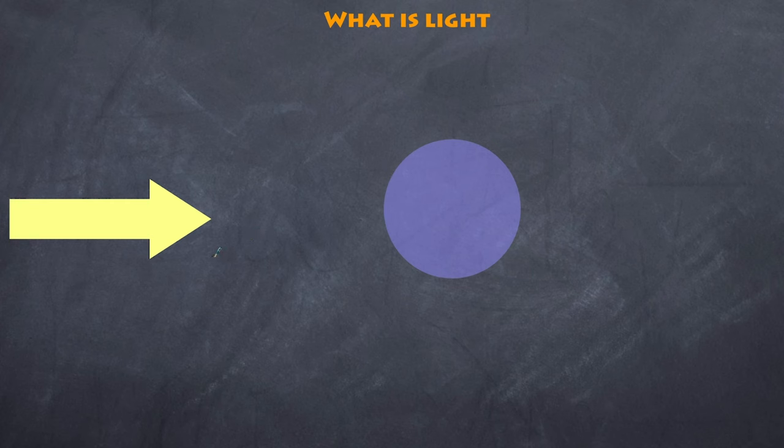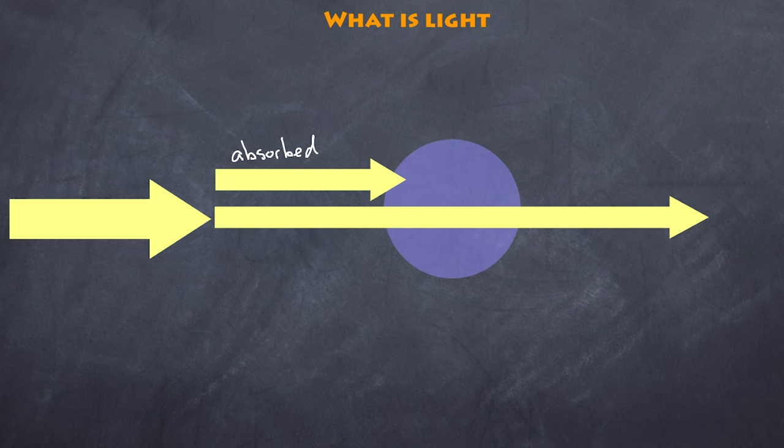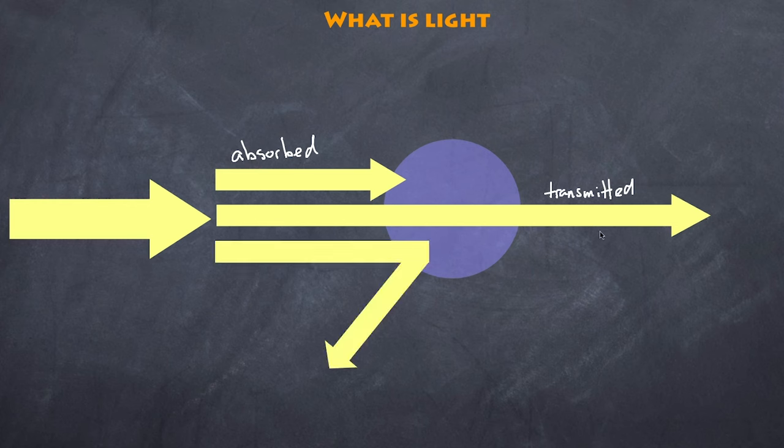Now what happens when light interacts with some sort of material? There's a number of things that can happen. The first thing is that it can be absorbed, so the energy of the light is absorbed by the material and the material might increase in temperature. The second thing that might happen is the light may be transmitted, so light passes straight through. Glass is a good example of where light can be transmitted through the material. The third thing that can happen is that the light can be reflected. Objects that we see are generally seen because light reflects off the substance.